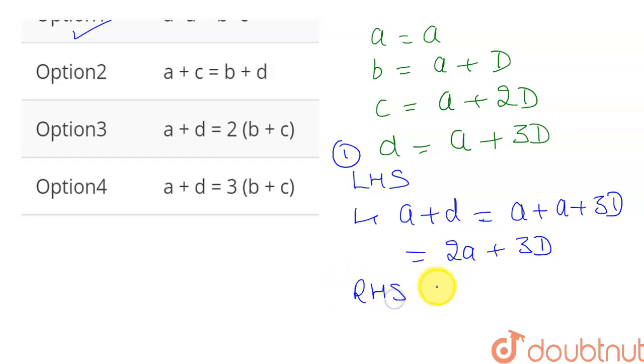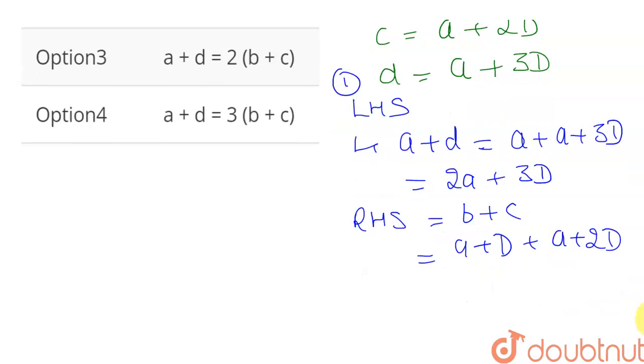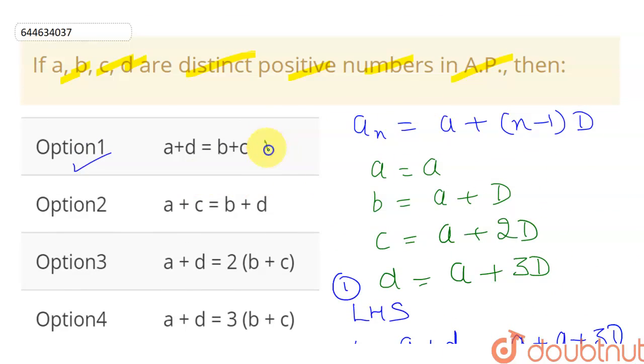Which is given as b plus c. So let me calculate this. b is a plus D, and c is a plus 2D. So this will be equal to 2a plus 3D. Now as you can see, my left-hand side is equal to right-hand side, so it means this relation satisfies this condition. So this option will be correct.